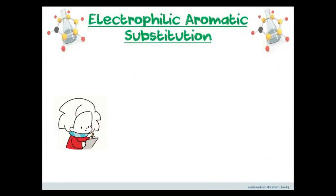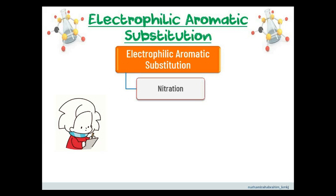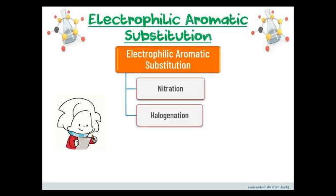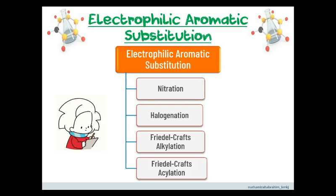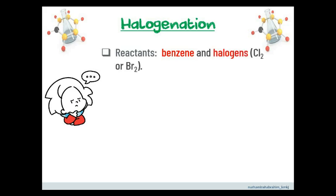There are four reactions associated with electrophilic aromatic substitution of benzene: nitration, halogenation, Friedel-Crafts alkylation, and Friedel-Crafts acylation. The first one is halogenation. The reactants must contain benzene and halogens — Cl2 or Br2.